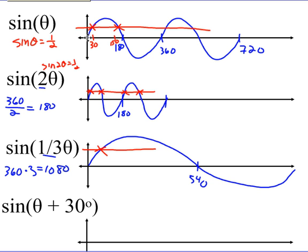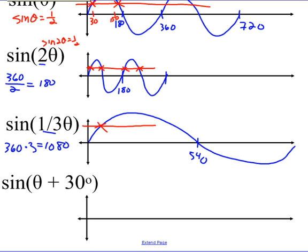Shifts also change our solutions. For sine of (θ + 30), instead of starting the sinusoidal axis on the y-axis, we start at 30 degrees and end at 390 instead of 360. So where sine equals 1/2 is no longer at 30 — it turns out to be at 60. We'll get more into how that all works.